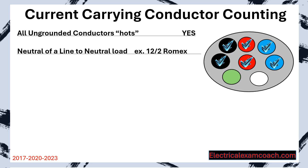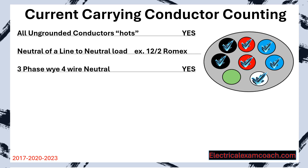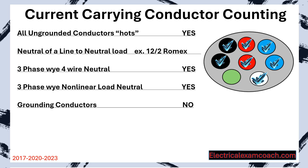The second one is the neutral of a line-to-neutral load — meaning if a light bulb draws one amp on a 120-volt circuit, there's one amp going in on the hot and one amp flowing back on the neutral, so it is a current carrying conductor. Same thing with a three-phase four-wire neutral and a three-phase non-linear neutral load — non-linear loads come from large fluorescent lighting or large computer data centers. Grounding conductors do not count.